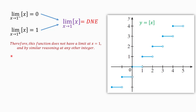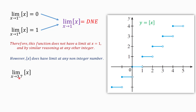However, this function does have a limit at any non-integer number. For example, suppose we want to find the limit of the greatest integer of X as X approaches 3.7. The point 3.7 is between 3 and 4. If we get closer and closer to 3.7 from the left or from the right on the graph of the function, the corresponding y-values are constantly 3. So the limit equals 3.